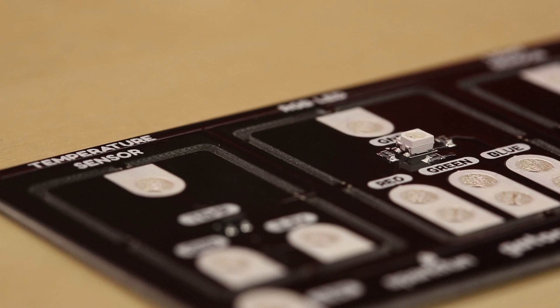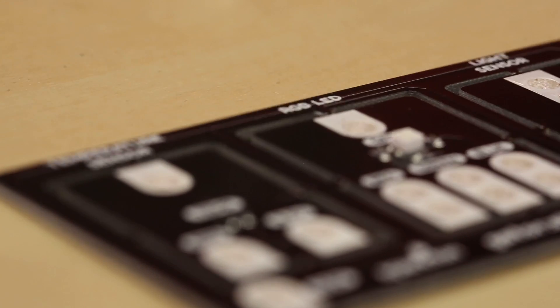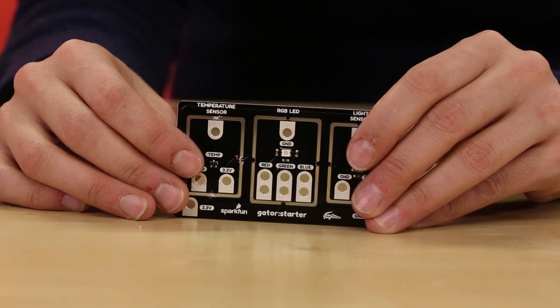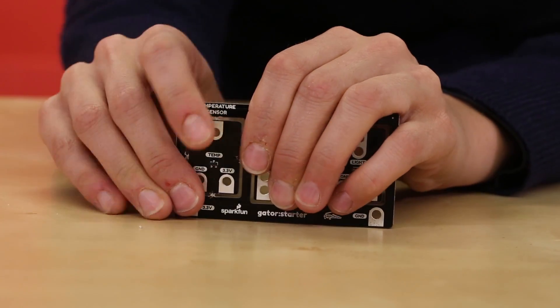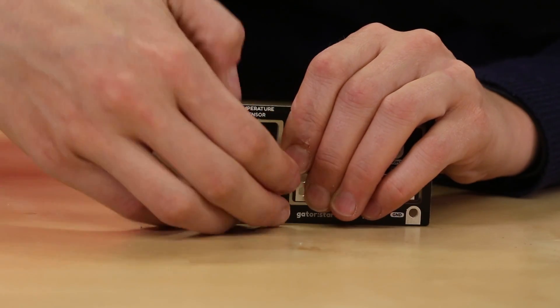The Gator Starter features a temperature sensor, light sensor, and an RGB LED. Each component can be used on the board or can be snapped out into its individual form.